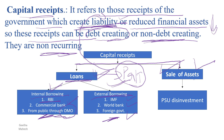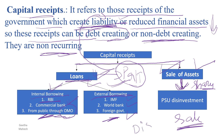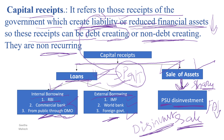Sale of assets: sometimes the loan amount is short, so the government sells shares of government companies. This is called disinvestment. Purchase is investment; sale is disinvestment. Public sector units adopt a disinvestment policy, which reduces financial assets. This is non-debt creating.